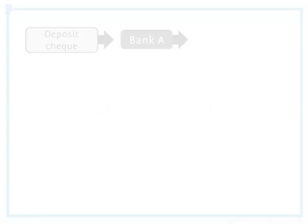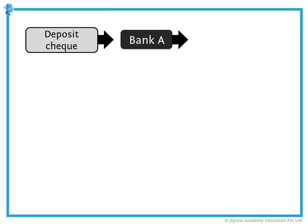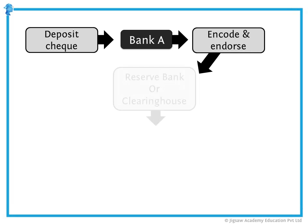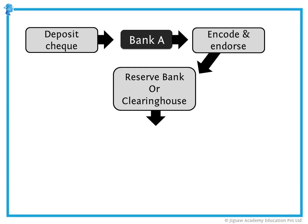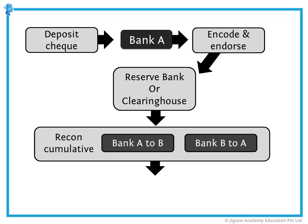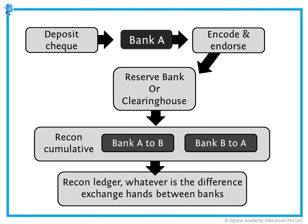How do banks process checks? When we go and deposit a check, our bank encodes it, endorses it, and sends it to the reserve bank of the region or a private clearinghouse. A reconciliation is done: how much money is moving from bank A to bank B, and how much is moving from bank B to bank A? They look at it cumulatively across all the checks that have come in for clearing that day. Then in the recon ledger, whatever is the difference — say if bank A owes some money to bank B — that small fraction is the only money which will exchange hands between the banks. That's how banks process our checks.